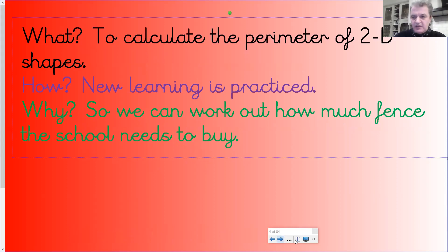Today's lesson, we're going to be calculating. So we're not measuring necessarily today, we're going to be calculating. The information, the measurements will be given to you, and you need to work out the perimeter of 2D shapes. So not measuring, but working out, calculating. New learning is practiced. We can work out how much fence a school needs to buy. Remember the perimeter is the distance outside the shape.